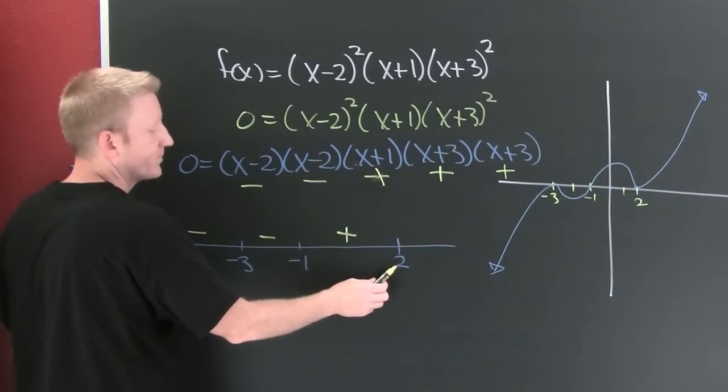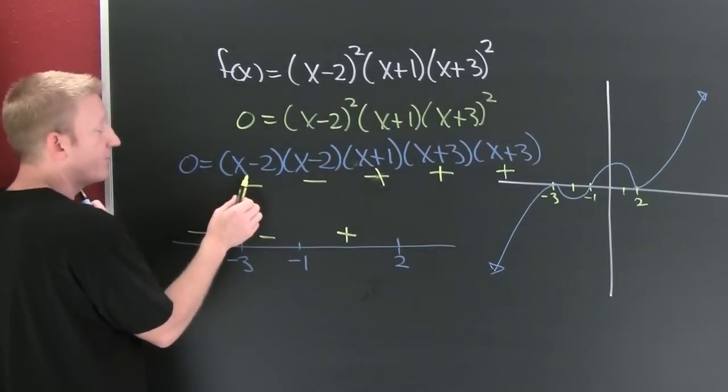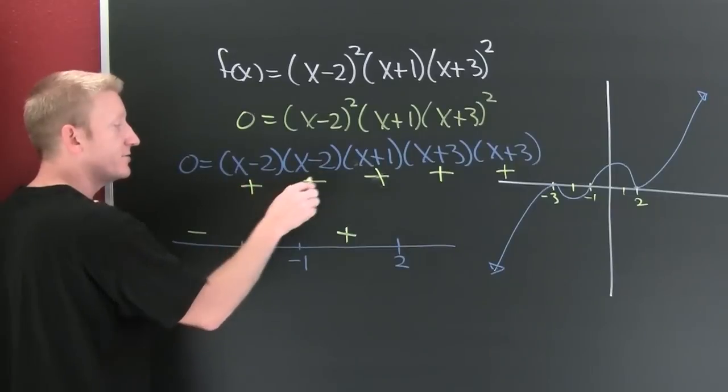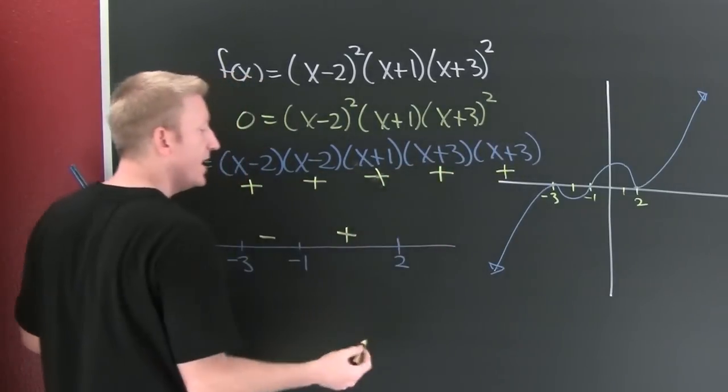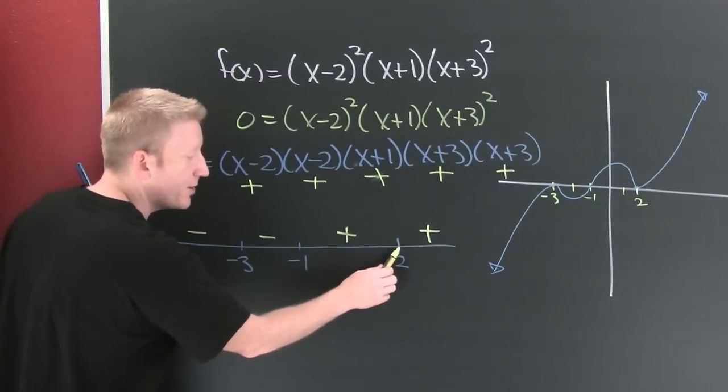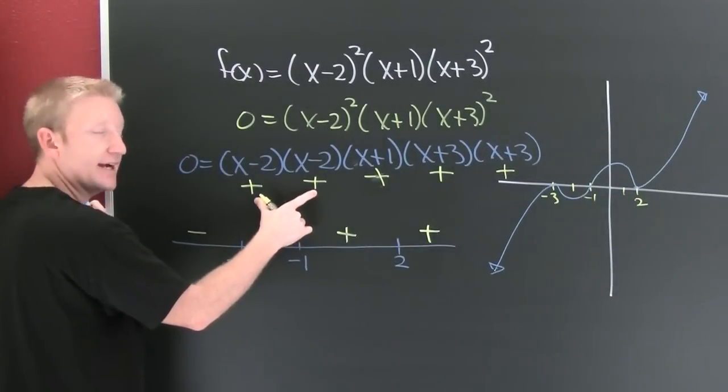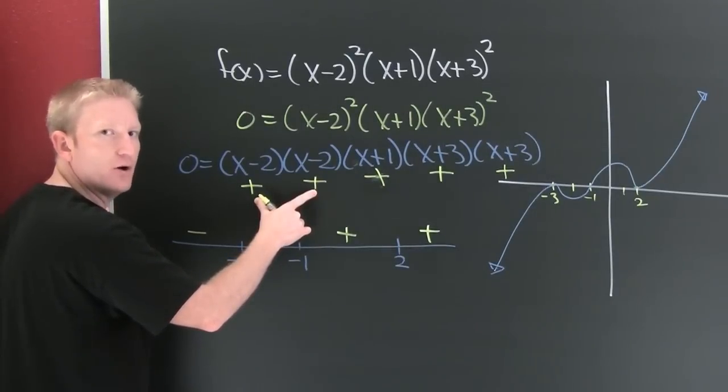And then to the right of 2, check 3. 3 makes this positive, positive, 3 makes this positive, 3 makes this positive, 3 makes this positive. And the whole thing? Positive. Look, we're going to bounce. Why? Because you're taking an even number of factors and you're switching them. Net, net, no effect on the value of your polynomial.